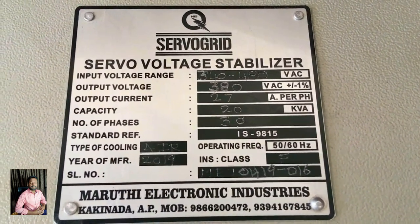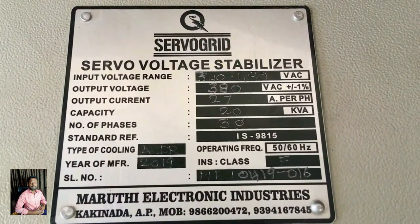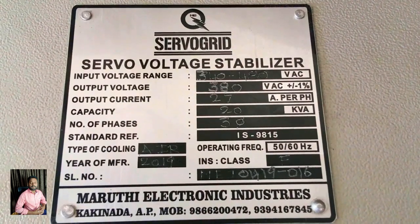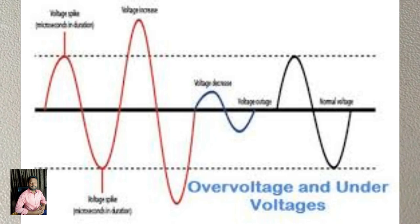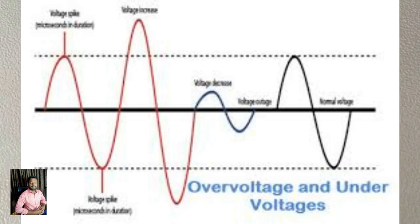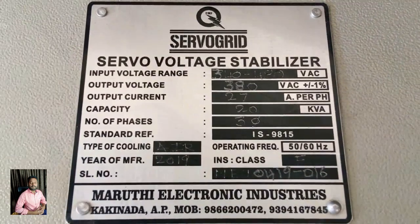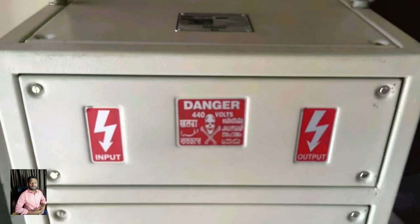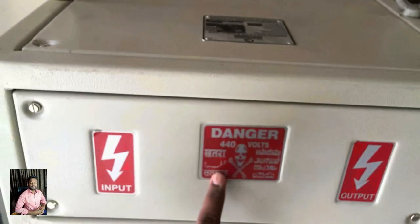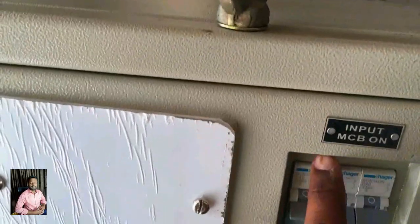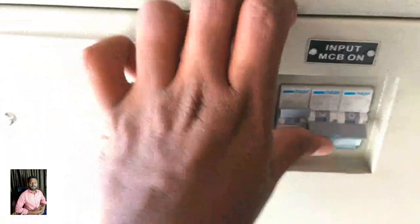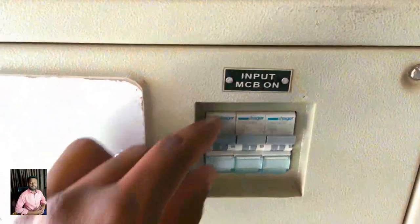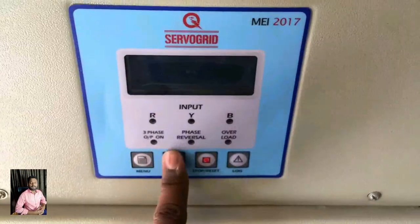First, I'm going to show you about the stabilizer. If you have voltage fluctuation — if the voltage decreases or increases — and you have ceiling fans or air conditioner, you will have a problem with low voltage. If your equipment runs on low voltage, it can get damaged.